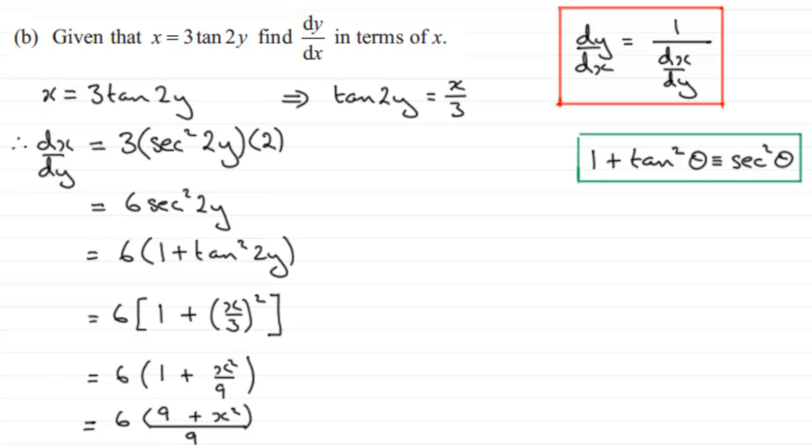Can you see that I can reduce this 6 and the 9 down because 3 goes into both of these two terms? 3 goes into the 6 twice and 3 goes into the 9 three times. So if I come down here, we've now got dx/dy equals 2 times 9 plus x squared all over 3.